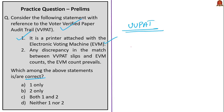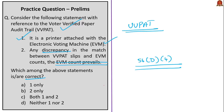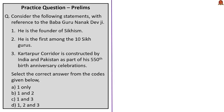The second statement: whenever there is any discrepancy in the match between VVPAT slips and EVM counts, the EVM count prevails. This statement is incorrect. According to Rule 56D(4b) of the Conduct of Elections Rules 1961, the VVPAT slip count prevails whenever there is any discrepancy between VVPAT slips and EVM counts. Only the first statement is correct, so the answer is option A: one only.